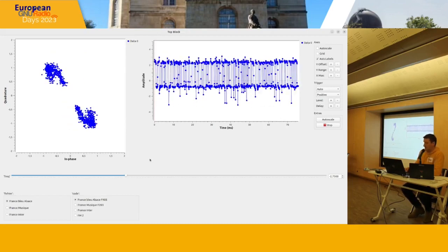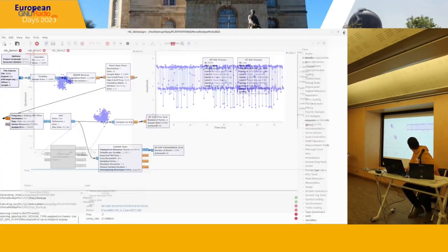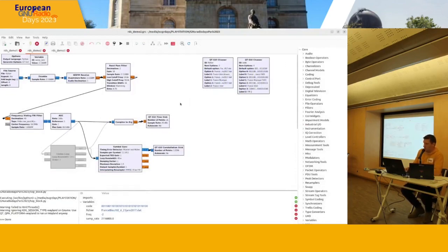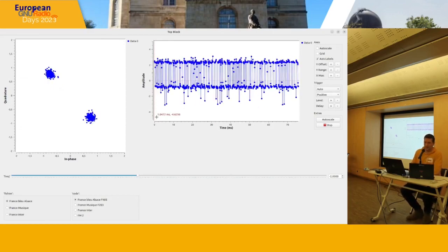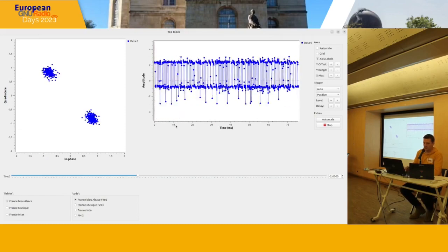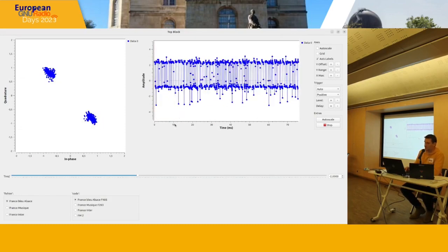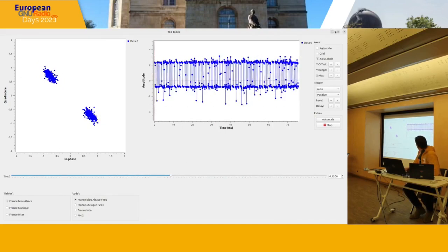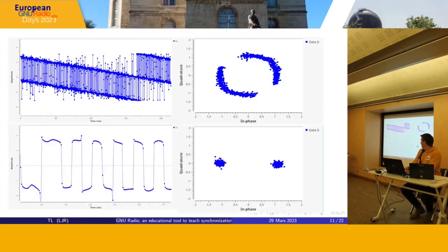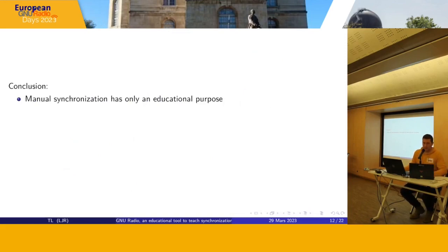Obviously, this manual synchronization has only an educational purpose. We now use the Costas loop block. We can see that the modification of the frequency is totally compensated by the Costas loop and has no visible effect on the signal — the signal is now perfectly stable. With this manipulation, we were able to illustrate and understand notions of synchronization and the role of the Costas loop without going into great mathematical details.